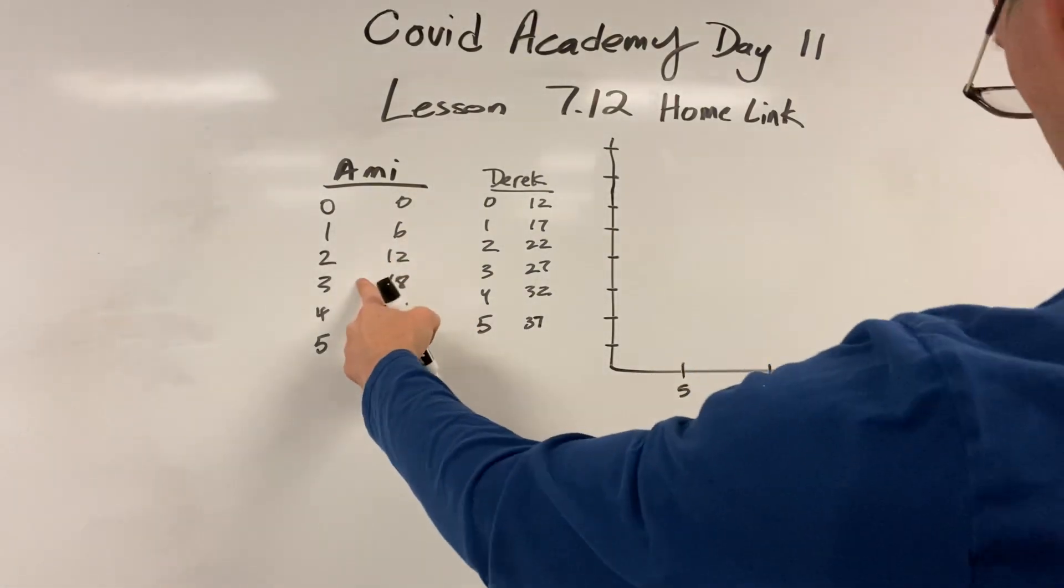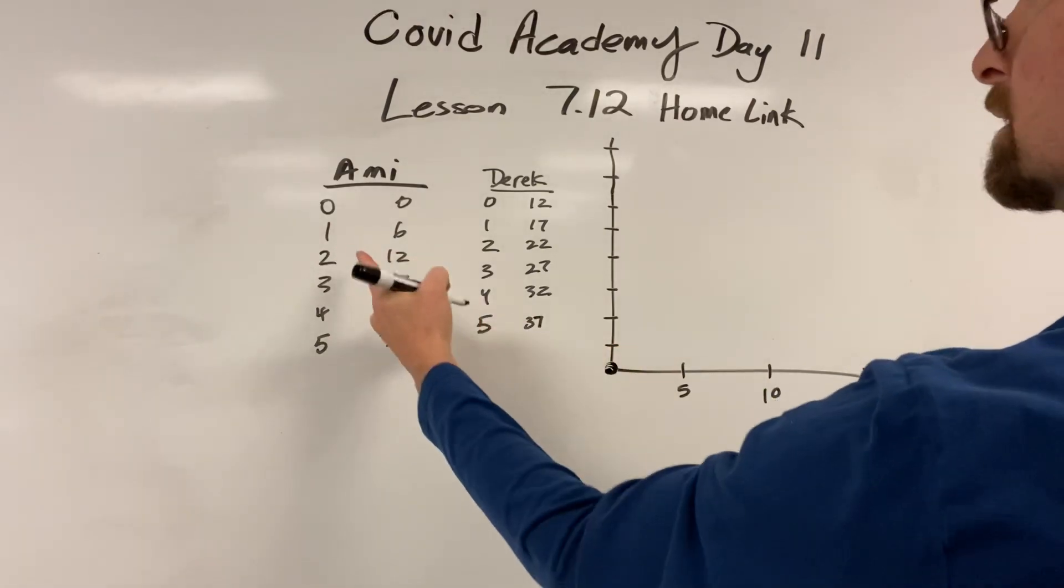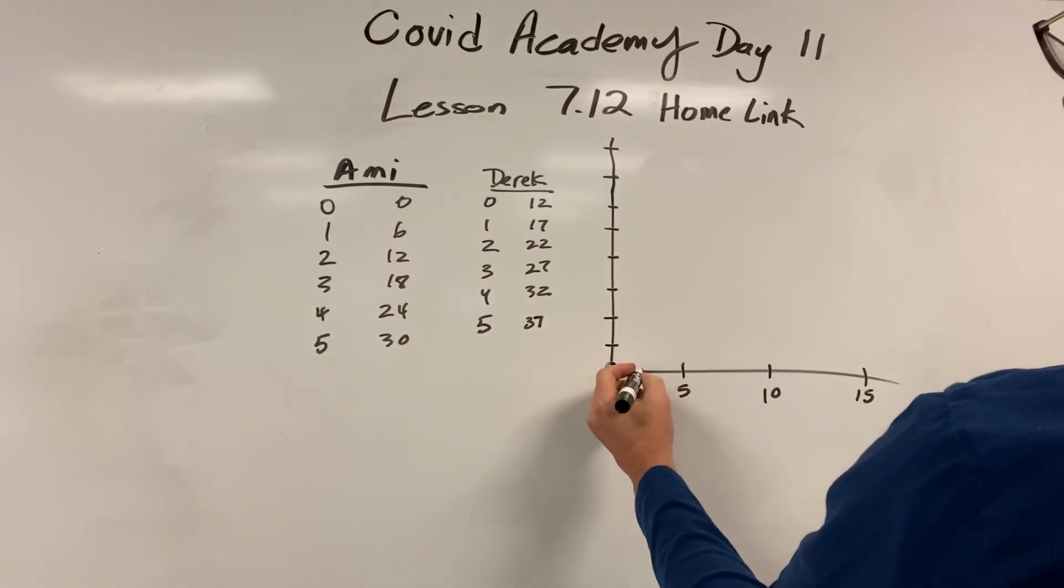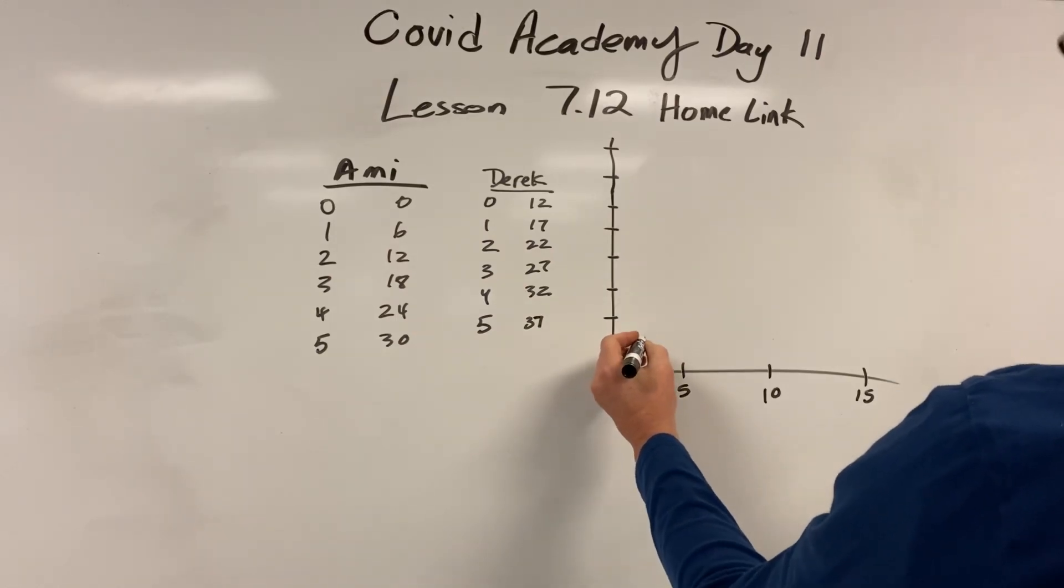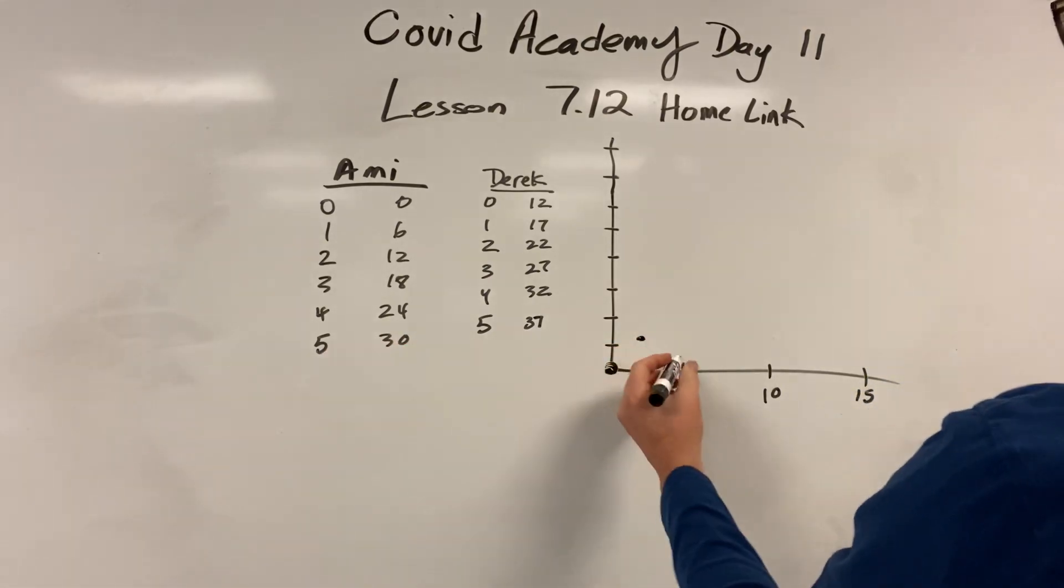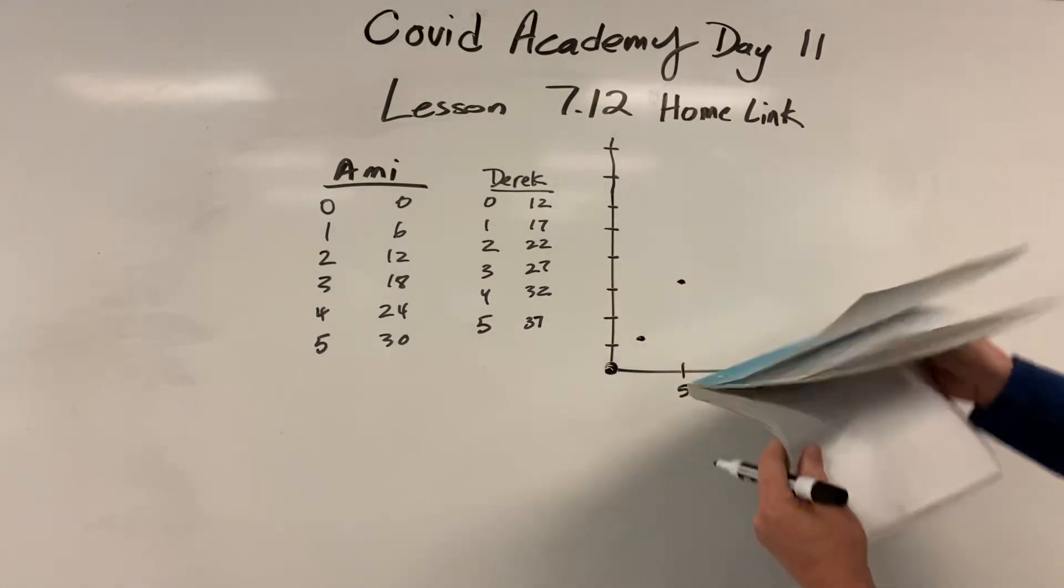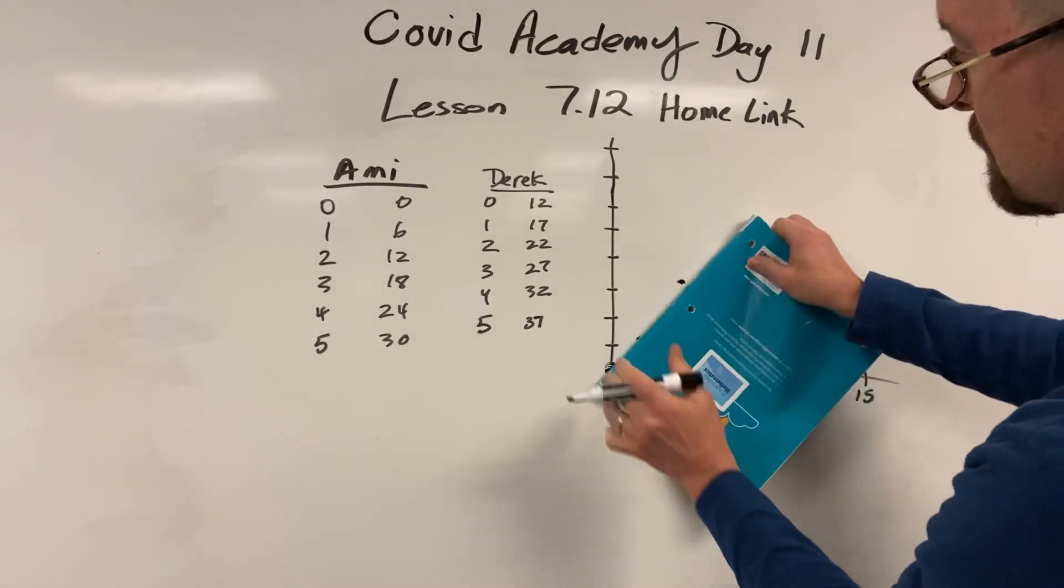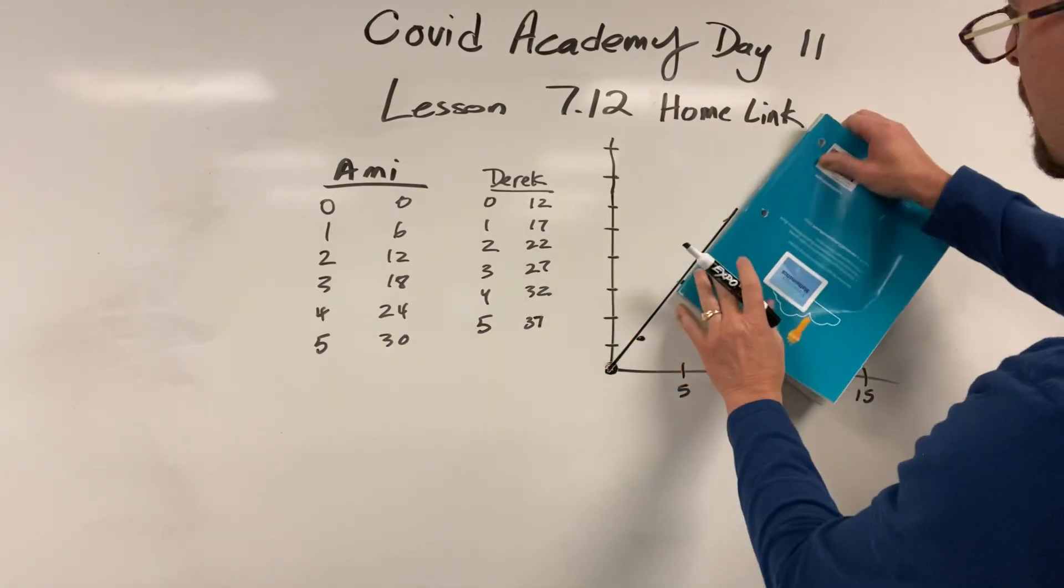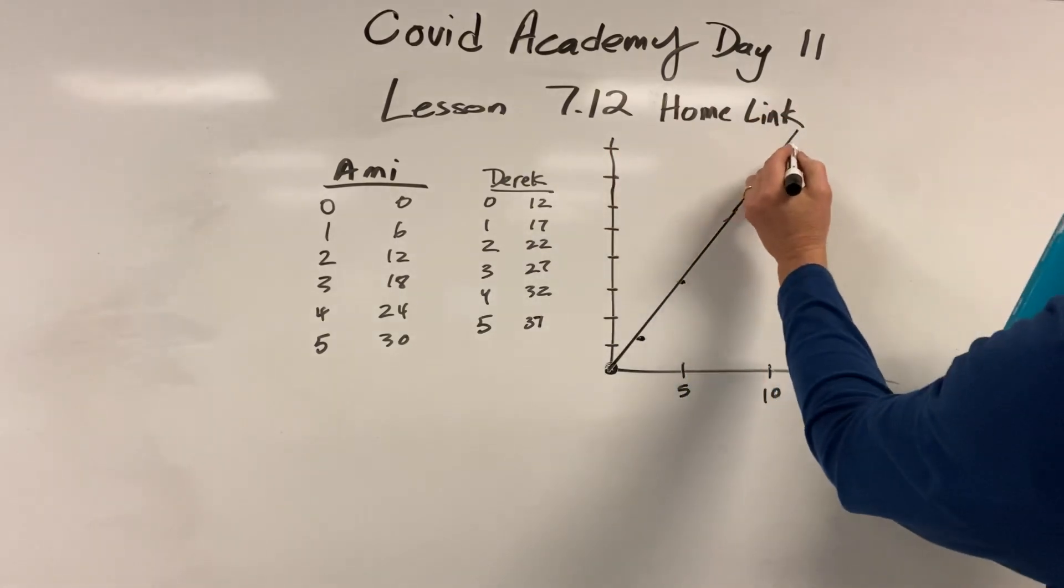Alright. So we're supposed to do that with three ordered pairs. Let's go 0, 0 for her. 2, 12. So 2 would be about there, and 12 would be about there. And then let's go to the last one, 5, 30. So 5 and 30. So with my straight edge... I've got to keep going. So, cross is the 80. Let's say that's the 80.